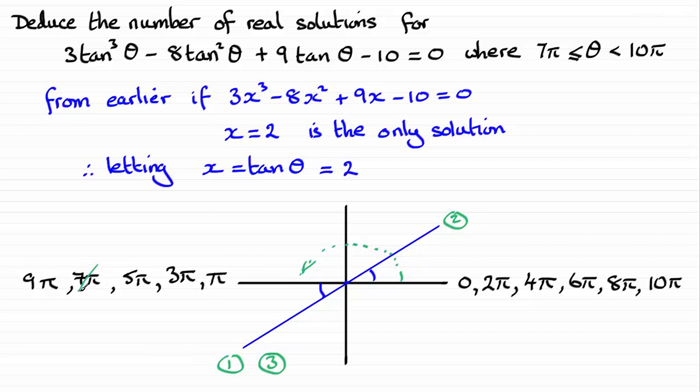The one that exceeds the 7π, the one that exceeds the 8π, and the one that exceeds 9π. Three solutions. So therefore we have three solutions in that range.